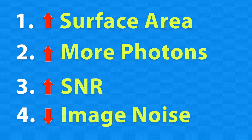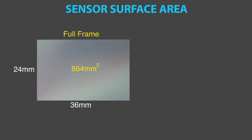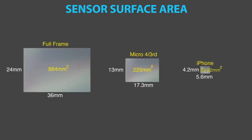If we do the math: a full-frame sensor is 24mm by 36mm, which is 864 square millimeters. A Micro Four Thirds sensor has an active area of 17.3mm by 13mm, giving 225 square millimeters. So 864 divided by 225 works out to 3.84 — a full-frame sensor is about four times larger in surface area than a Micro Four Thirds camera. iPhones are much smaller still, around 5.6mm by 4.2mm, giving about 23.5 square millimeters — a much smaller surface area.